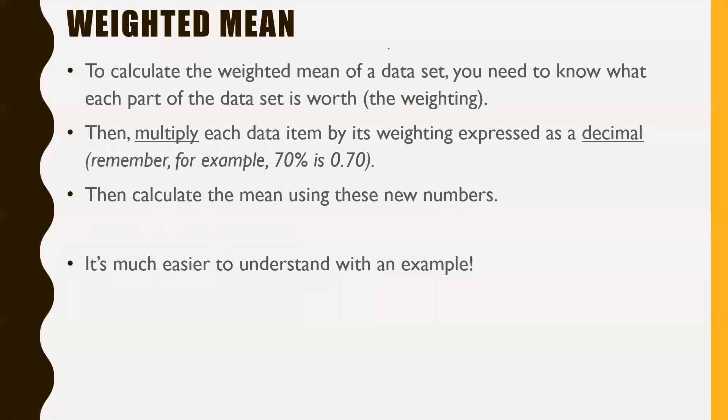To calculate the weighted mean of a data set, you need to know what each part is worth - the weighting. Then multiply each data item by its weighting expressed as a decimal. For example, if something was worth 70%, you would multiply that data number by 0.70. Then calculate the mean using those new numbers. It's way easier to understand with an example.